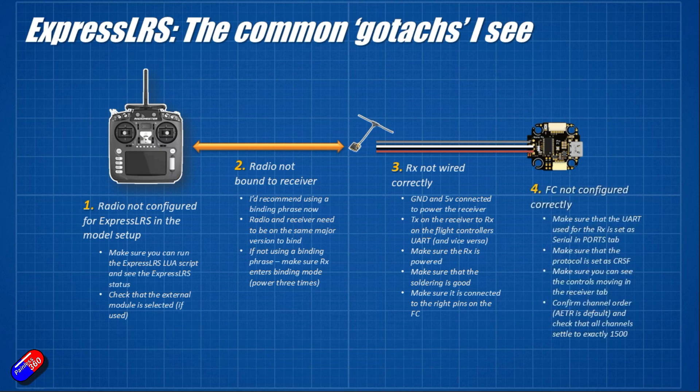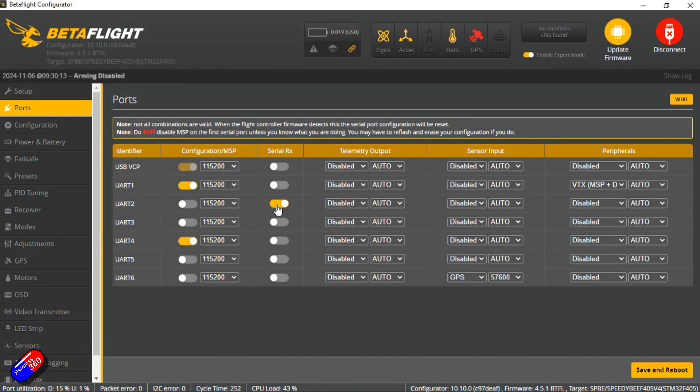The final area is the configuration of the flight controller itself. Now in here, what you have to do is make sure that the UART is set for serial receiver for the one that you have it plugged in on. So that's what this looks like. So in the ports tab, for example, in this speed B example, this is going to be this UART2 is set for serial RX. That tells the flight controller this is the one it should be listening to.